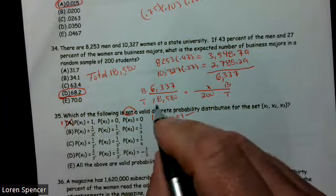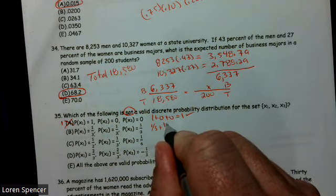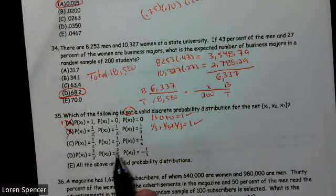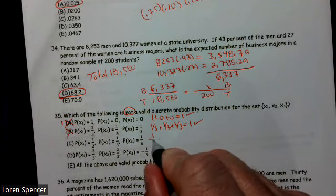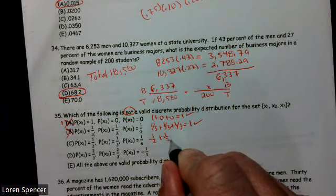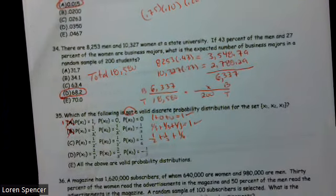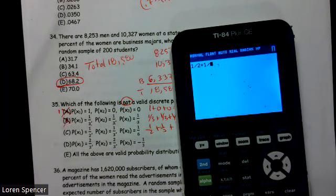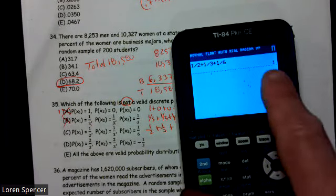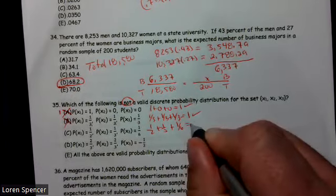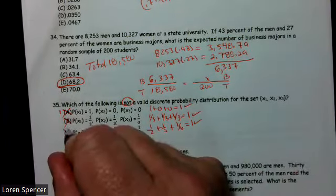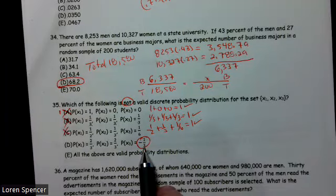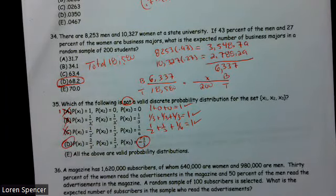1 third plus 1 third plus 1 third. Well, that equals 1. So that's good. 1 half plus 1 third plus 1 sixth. May not be good at fractions. Don't worry about it. You got a calculator. So 1 divided by 2 plus 1 divided by 3 plus 1 divided by 6. Oh, that equals 1. So that's also good. Oh, I have a negative probability. I don't even have to add them up. Can't have a negative probability. That's not valid.